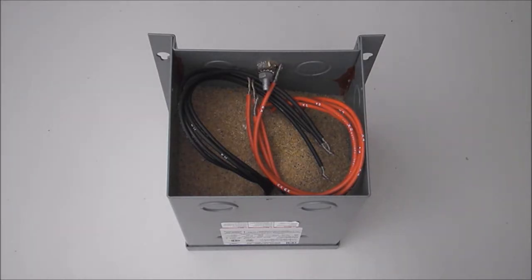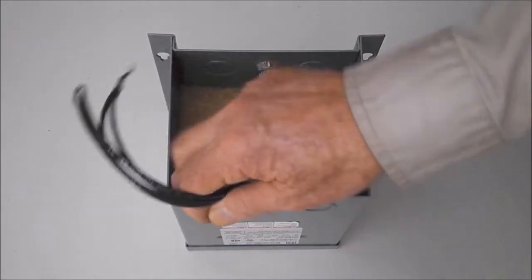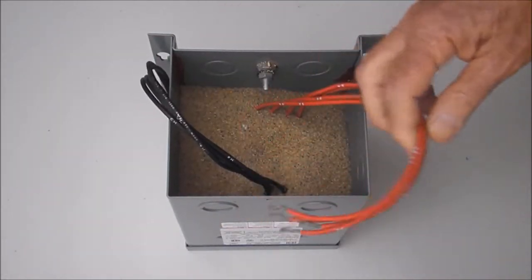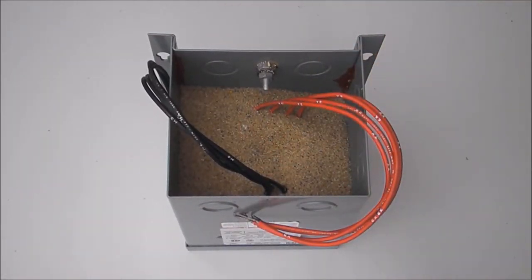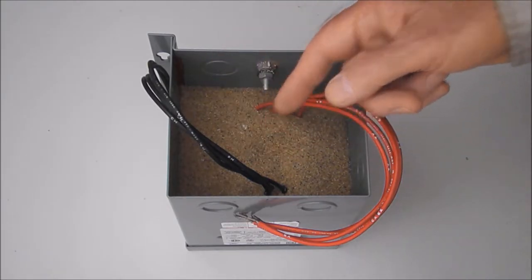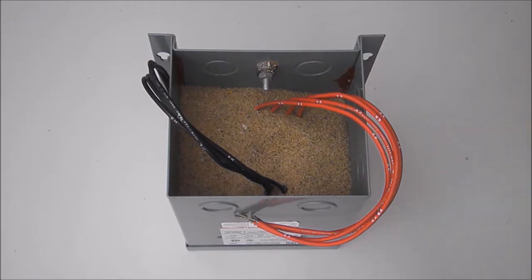All such transformers have four H connections and four X connections. On this particular transformer, the H wires are black and the X wires are red. This coloring is visually convenient, but is not always the case. Sometimes all wires are black, sometimes all are red, and so forth.